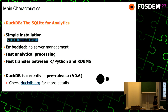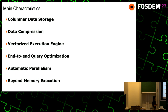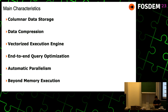DuckDB is currently in pre-release. The last version released was 0.6, and 0.7 is coming up soon. I'm going to go over some of the main characteristics of DuckDB: columnar data storage, a little bit about compression, vectorized execution engines — though talking about vectorized execution will be difficult because Professor Boncz is here and he actually created that, so I'll try to do it correctly — end-to-end query optimization, parallelism, and beyond-memory execution.